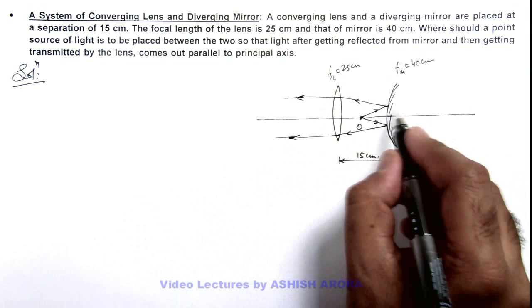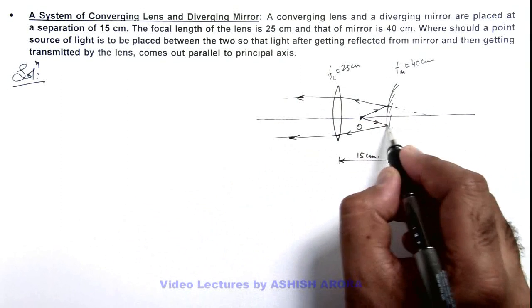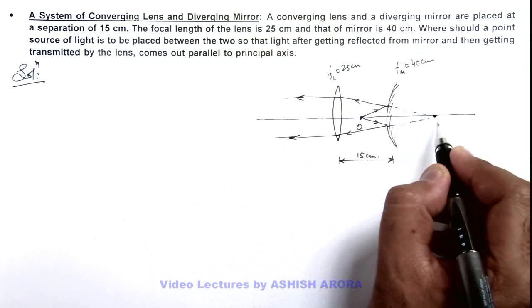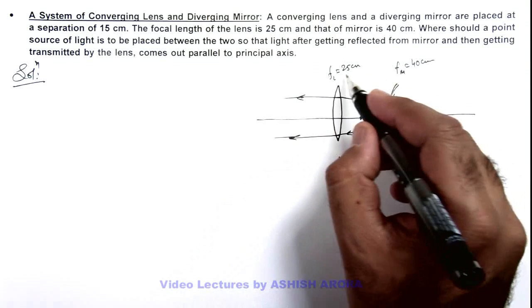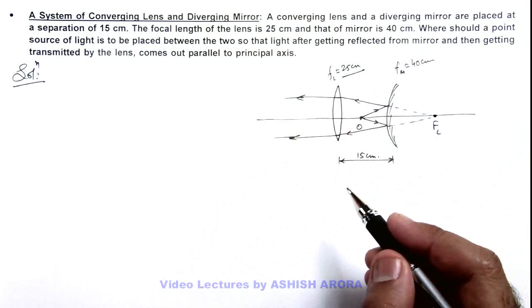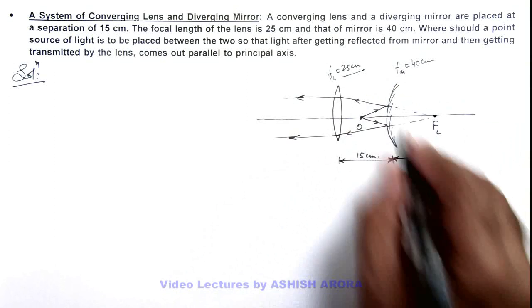This is possible only when the light rays which are incident on the lens will appear to be coming from the focal point of this lens which is at a distance 25 centimeters. So here we can write this should be at a distance 10 centimeters behind the mirror.